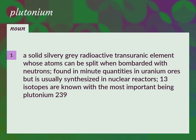A solid silvery-gray radioactive transuranic element whose atoms can be split when bombarded with neutrons. Found in minute quantities in uranium ores but is usually synthesized in nuclear reactors. Thirteen isotopes are known, with the most important being plutonium-239. Atomic number 94.